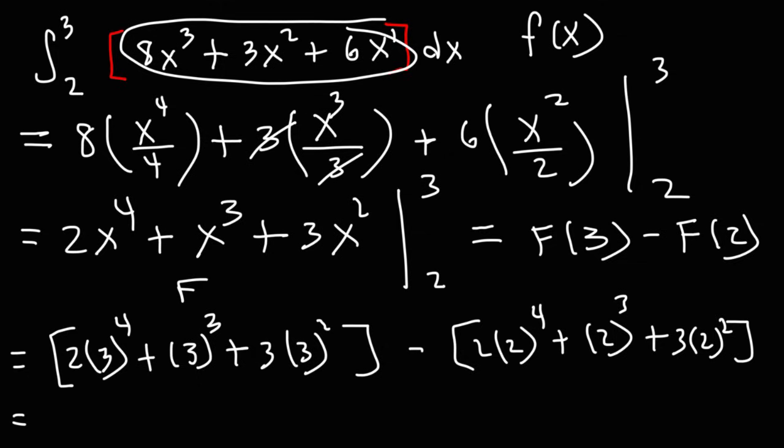So this is F of 3 and this here is F of 2. So at this point we just need to do the math. 3 to the fourth power is 81 and 81 times 2 is 162. 3 to the third is 27. 3 squared is 9 times 3. That's 27 as well. 2 to the fourth power, if you multiply 4 2's you're going to get 16. And 16 times 2 is 32. 2 to the third power is 8. 2 squared is 4 times 3. That's 12.